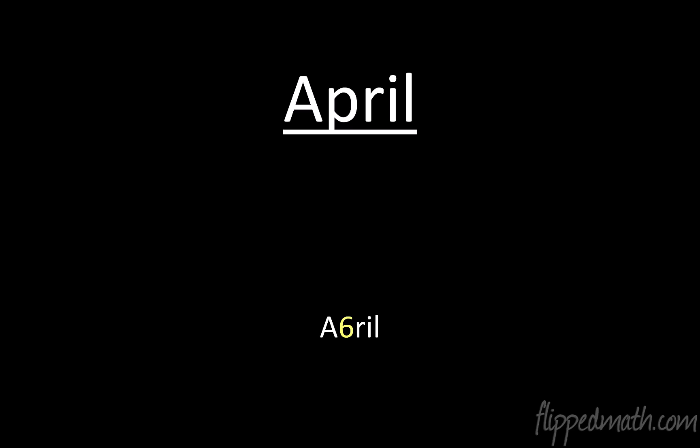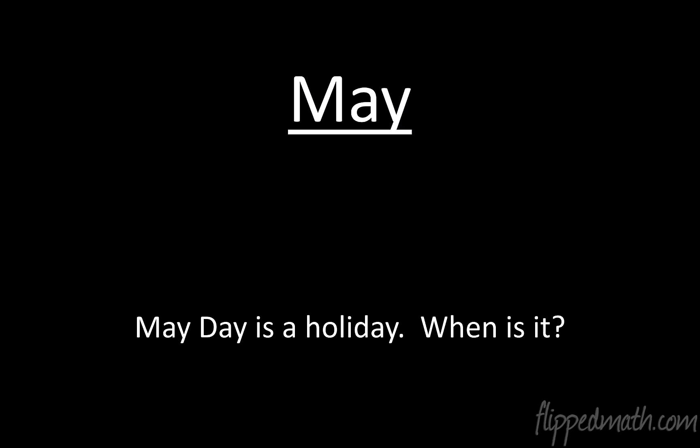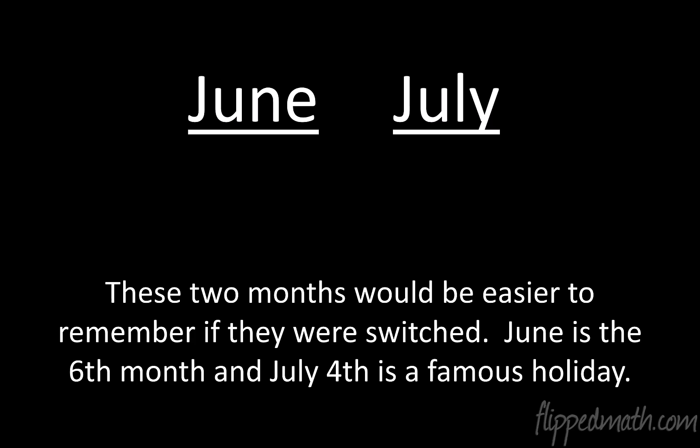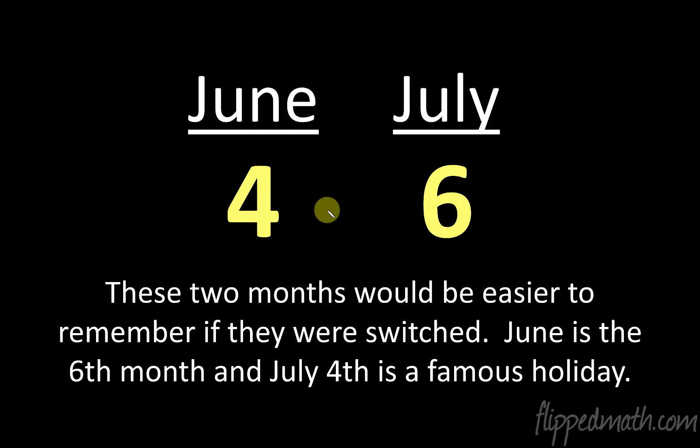Moving on to April — I'll admit, April and November, I don't have great tricks for. April is a six; if you have a good idea for how to remember that, put it in the comments. May: May Day is a holiday, May 1st — so May is a one. June and July: June is the sixth month, but six goes with July, and four goes with June. So June has a month value of four and July has a month value of six. Wouldn't it be nice if it were the other way around? It's not — we have to switch them.